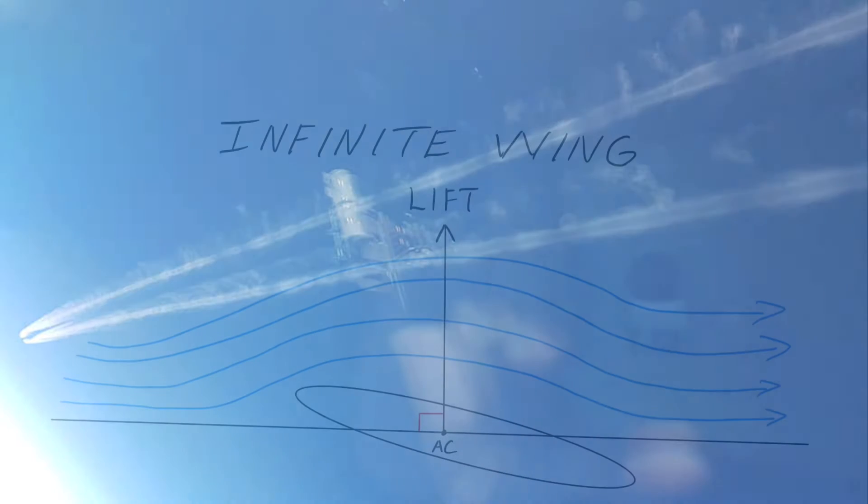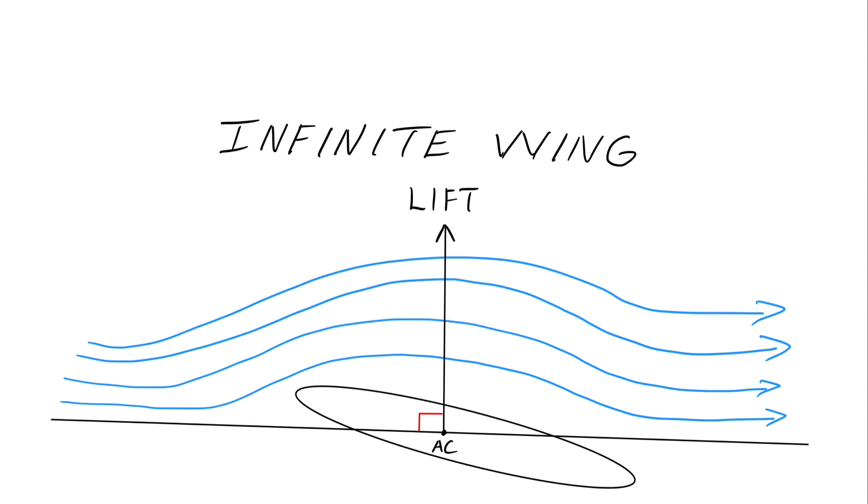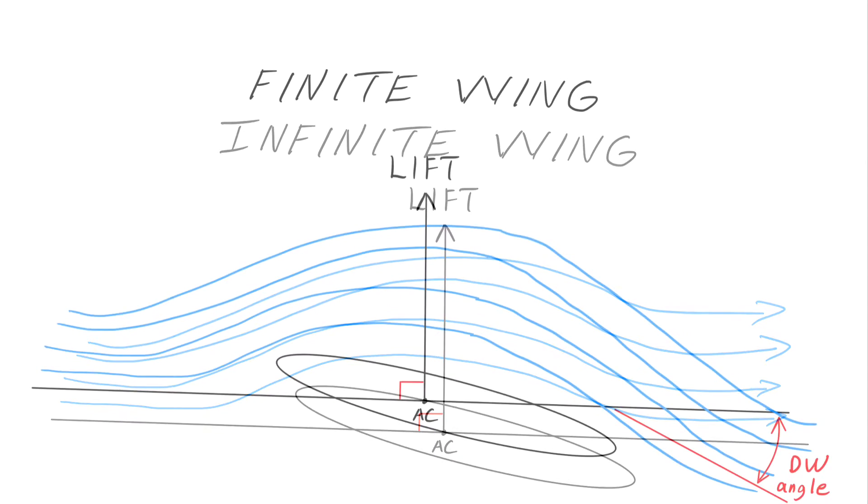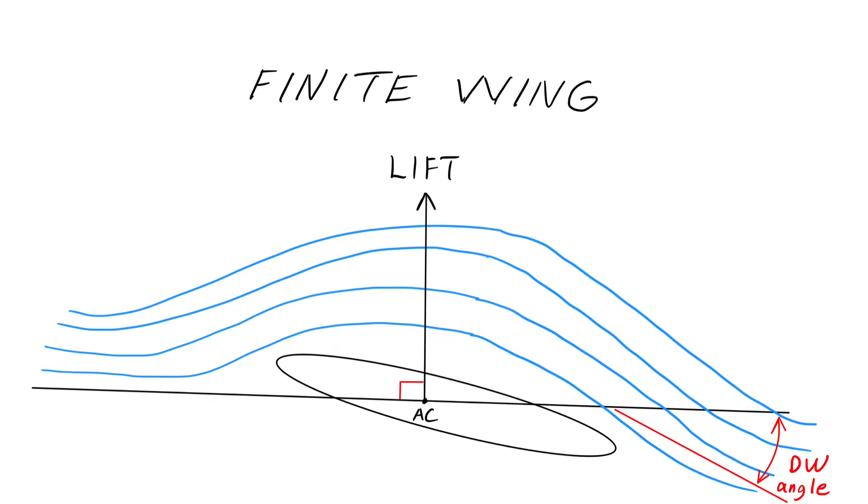Induced drag is caused by wingtip vortexes that affect the airflow pattern about the wing. I think I'm getting ahead of myself. Let me first mention a couple of concepts. First, we have something called an infinite wing. And then secondly, we have something called a finite wing.